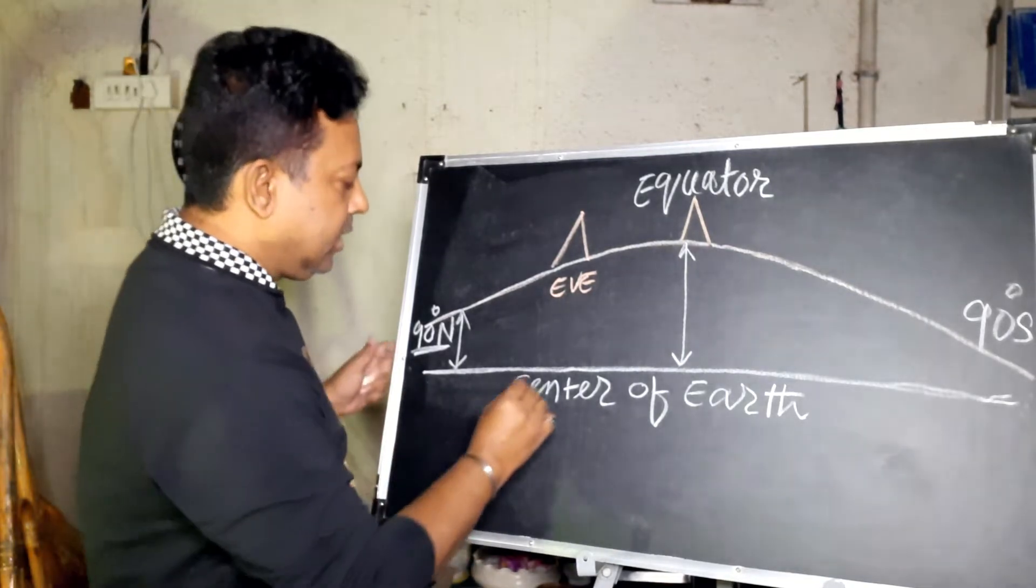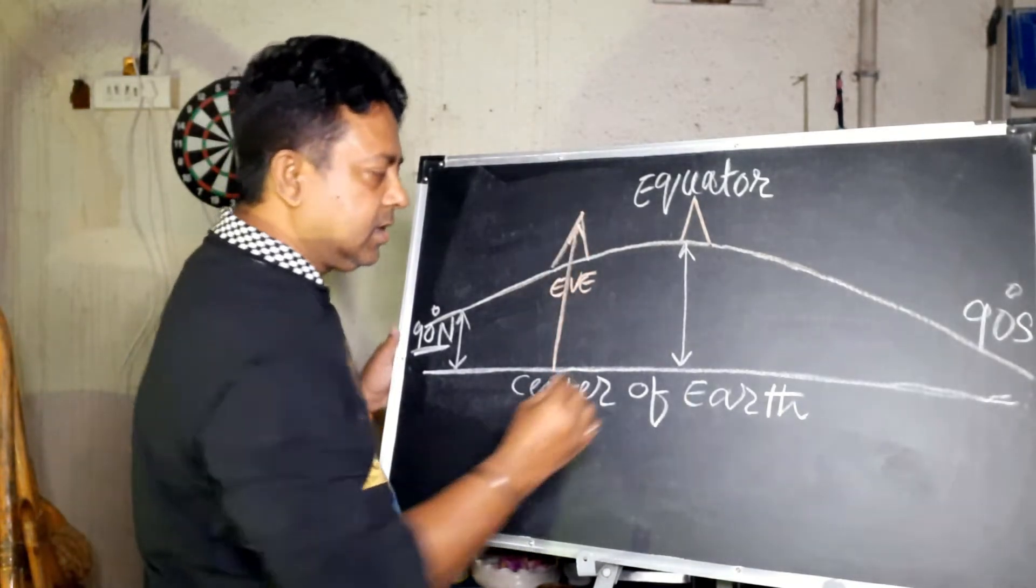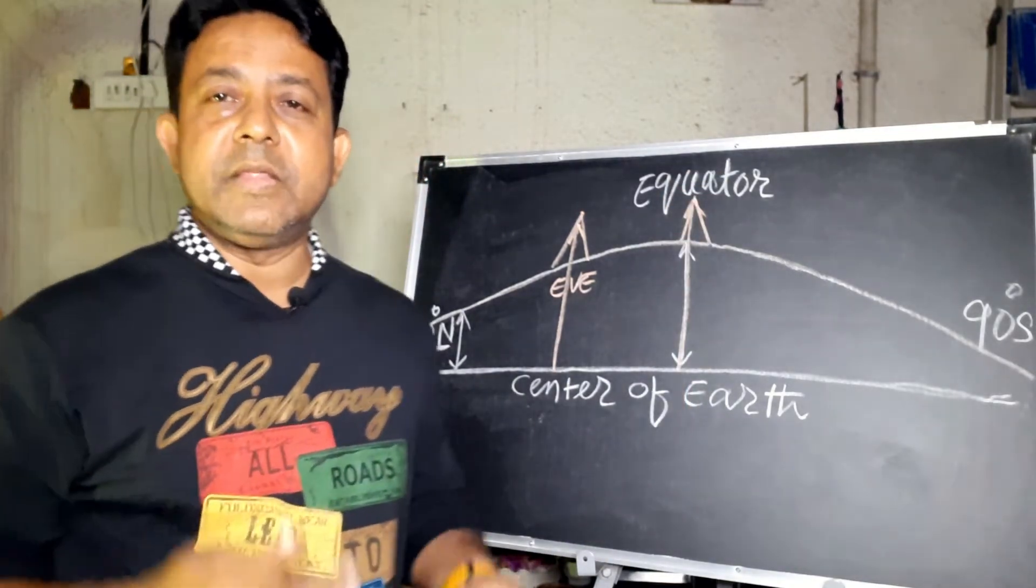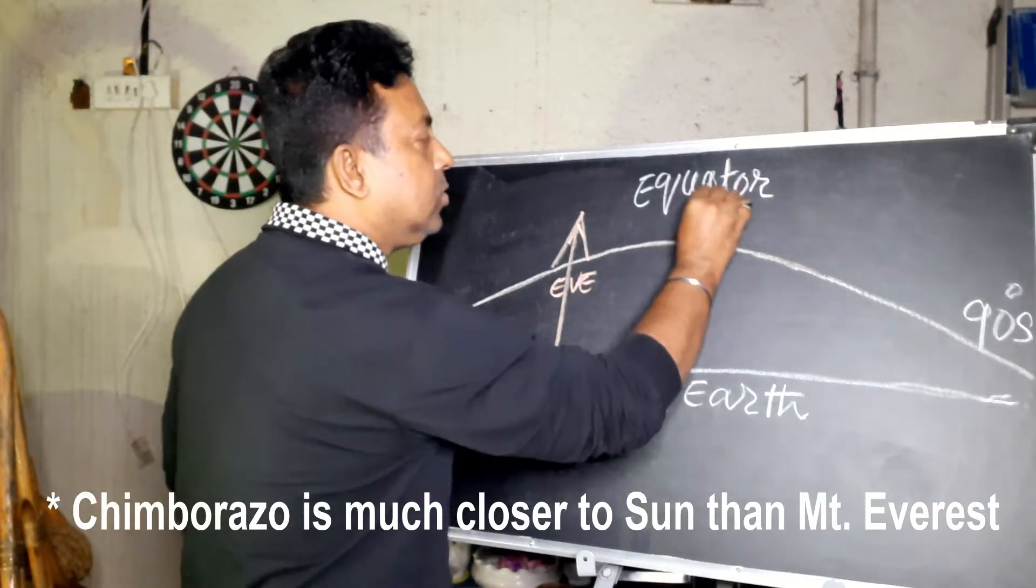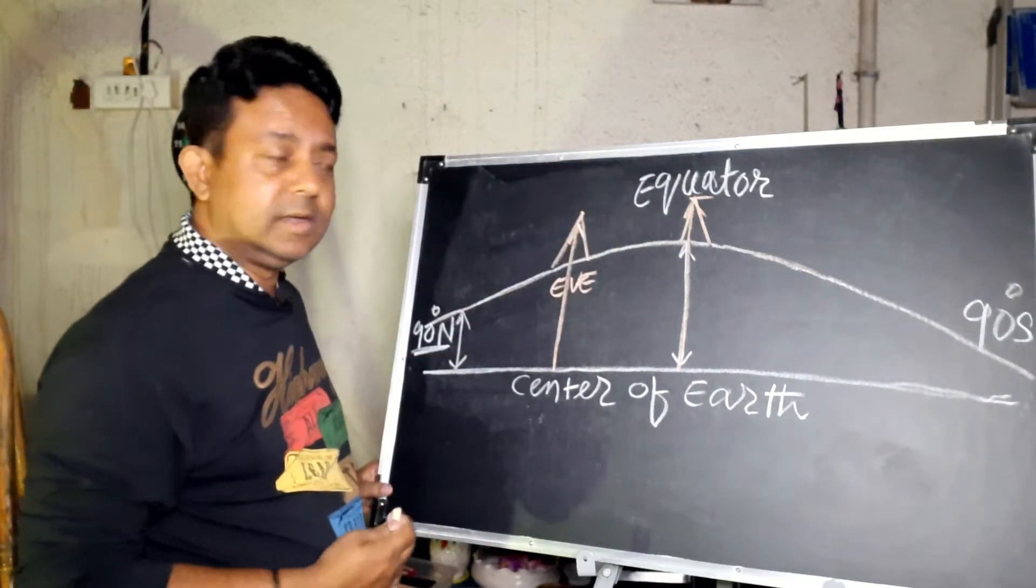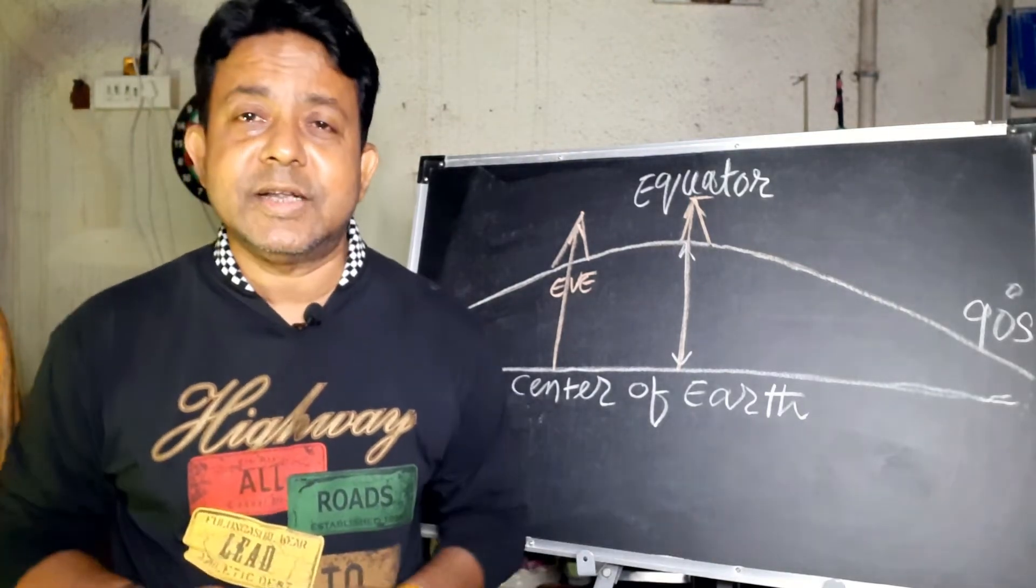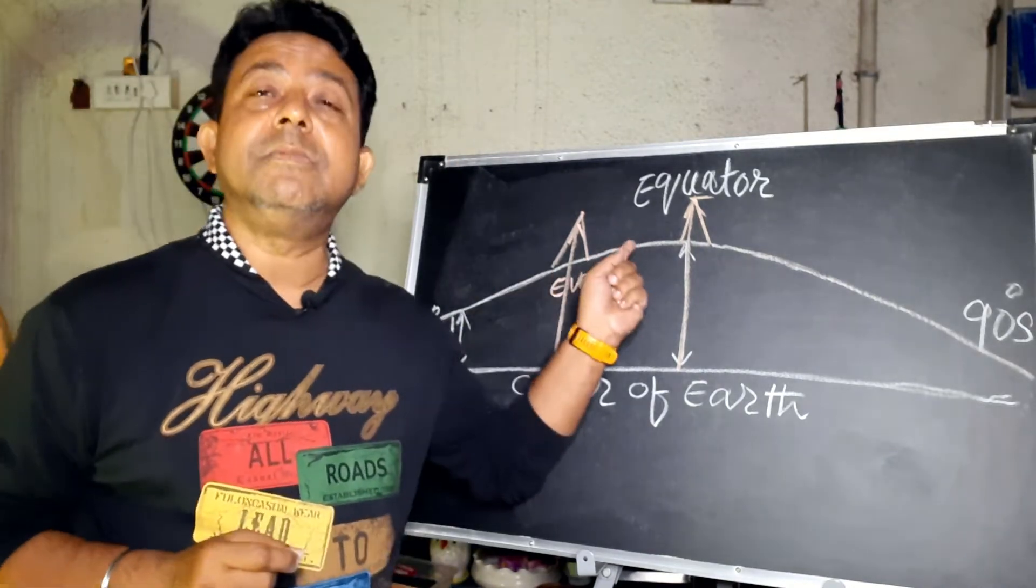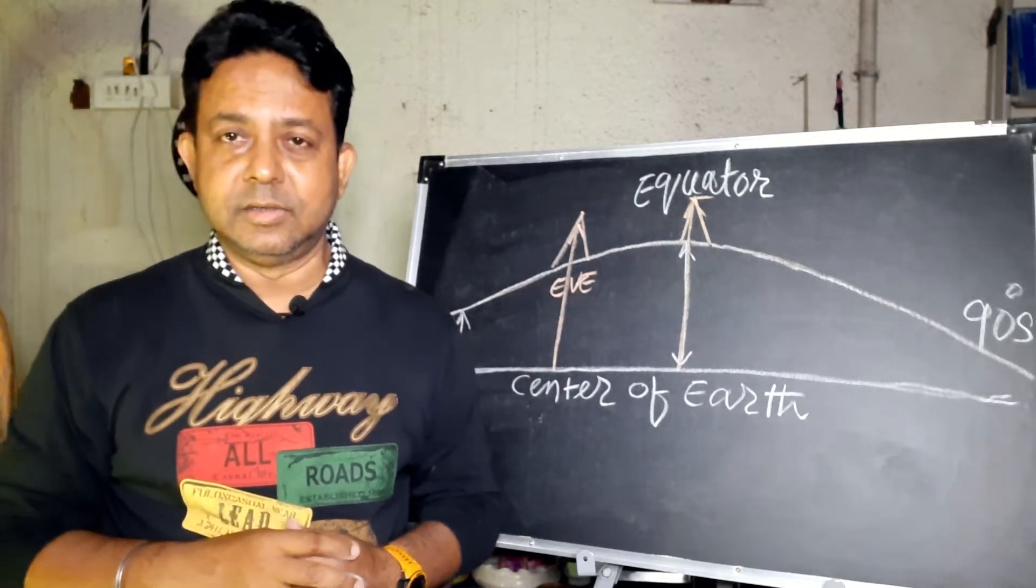So you see from the center of the Earth, the distance to Everest, and from the center of the Earth, the distance to Mount Chimborazo, there is a big difference. It means Mount Chimborazo is much further to the Sun, much further into space than Mount Everest. So if some extraterrestrial person is looking down on the Earth, they will see that Mount Chimborazo is jutting out more on the surface of the Earth, not Mount Everest.